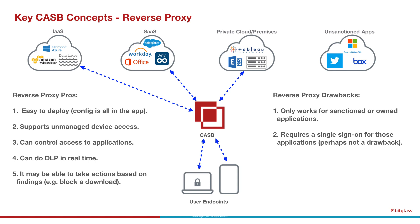So which of these methods is best? The answer is you really need all of them, because they each have specific use cases. APIs make sense when you have a lot of data already in the cloud and for cloud-to-cloud control. Forward proxy makes a lot of sense for controlling unsanctioned applications. Reverse proxy makes sense for sanctioned applications, IaaS, and private cloud premises applications, as it can address both managed and unmanaged endpoints for access control and DLP, and is easy to deploy without endpoint configuration. That's the three methods CASB providers use to solve the problems that have come about as we've moved into the cloud and mobile world.